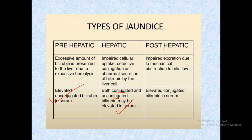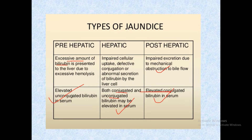In post-hepatic jaundice, conjugation of bilirubin occurs normally in the liver, but the conjugated bilirubin cannot exit into the small intestine due to obstruction of the bile duct by a gallstone. This impaired excretion causes conjugated bilirubin to be reabsorbed directly into the serum, resulting in elevated conjugated bilirubin.